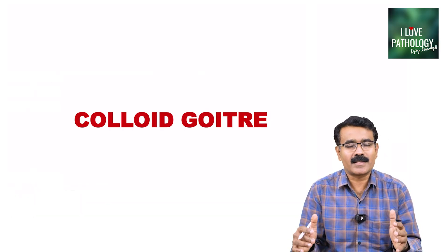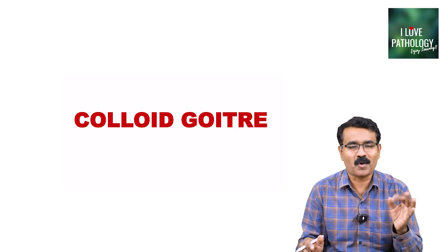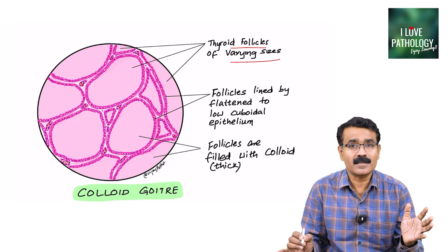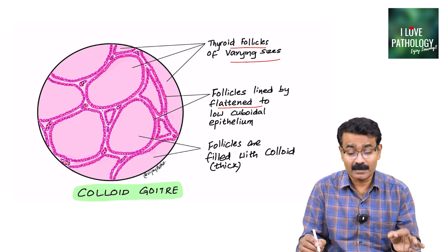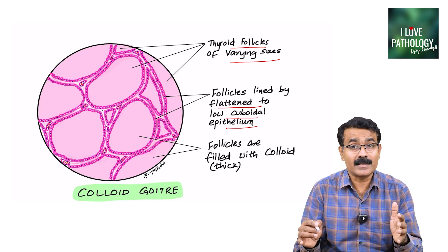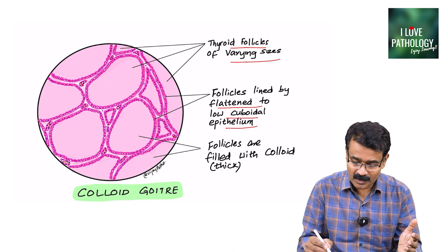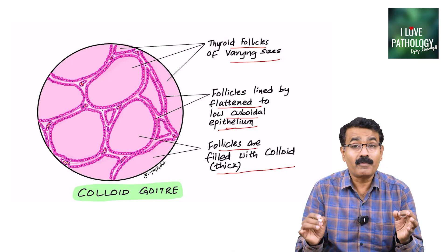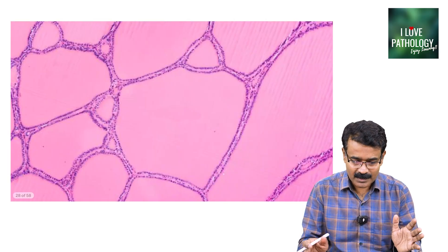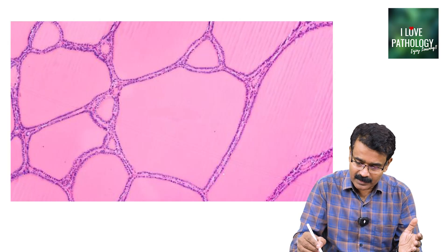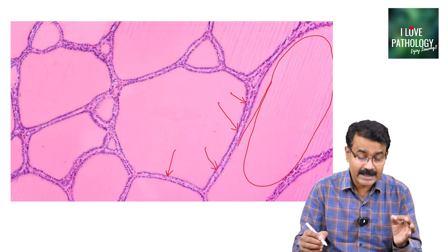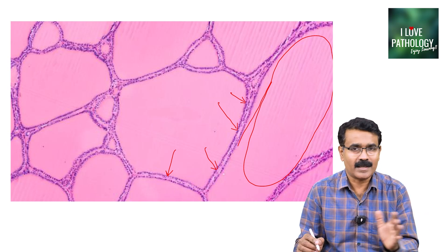Moving on to thyroid pathology, the most common and easiest slide is colloid goiter. All you can see is thyroid follicles of varying sizes, lined by flattened to low cuboidal epithelium — a very characteristic feature. The lumens of the follicles are filled with colloid, which is bright pink in color. Colloid goiter is very simple — variable size follicles filled with colloid, each lined by flattened or low cuboidal epithelium.